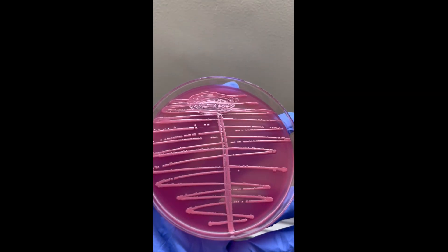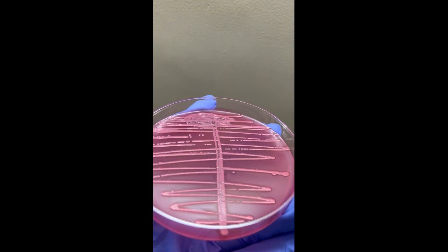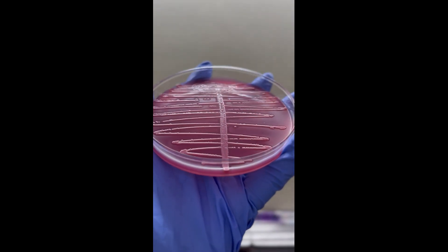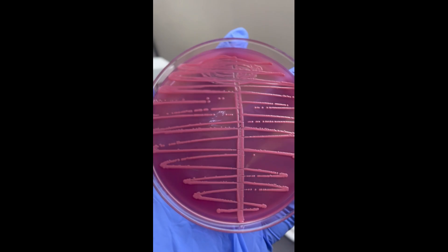And this is the E. coli that I had subcultured. After 24 hours it is showing lactose fermenting, that is pink colonies, which is actually what is to be shown in a MacConkey agar.